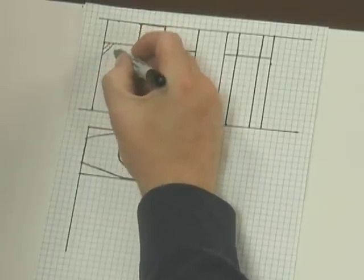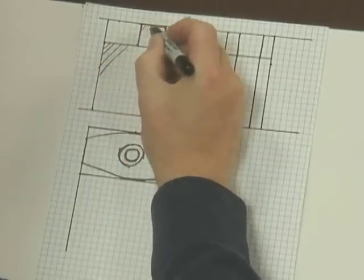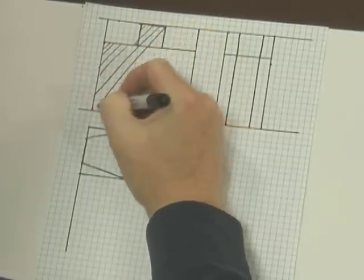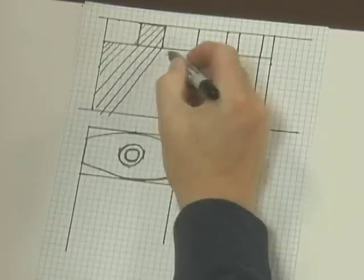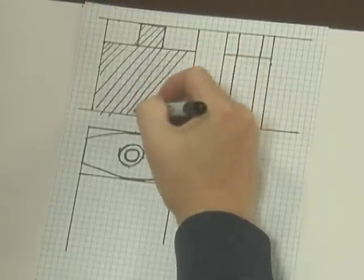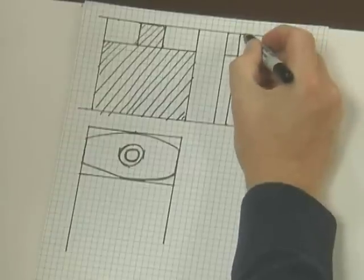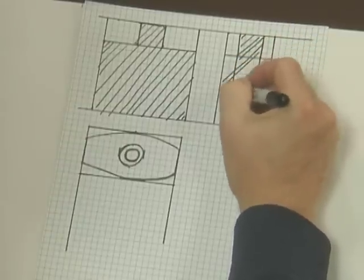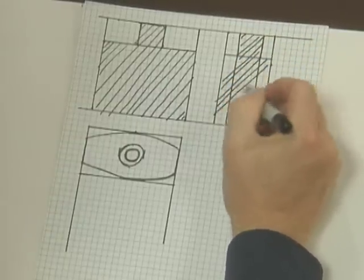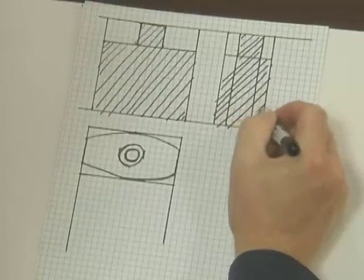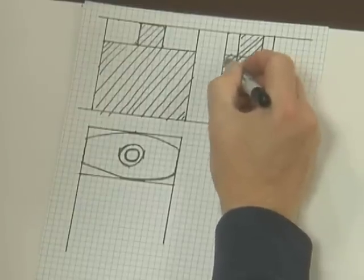But essentially we've got the body of the ceramic vase lying there in our drawing. I've got the part of the side elevation showing through about there.